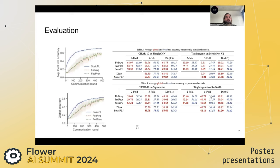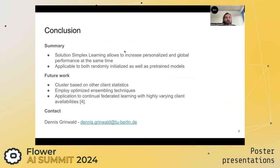We have evaluated our method against several baselines on several different non-IID splits: the two-fold split, five-fold split, and different Dirichlet splits. For the two-fold and five-fold settings, SuSiCL and SuSiCLFL+, which are our methods, strongly improve baseline performance. For Dirichlet splits, we also see an improvement. Subspace simplex learning allows us to increase both personalized and global performance simultaneously, and our method can be applied to both randomly initialized and pre-trained models, where we train the simplex over the last classification layer.